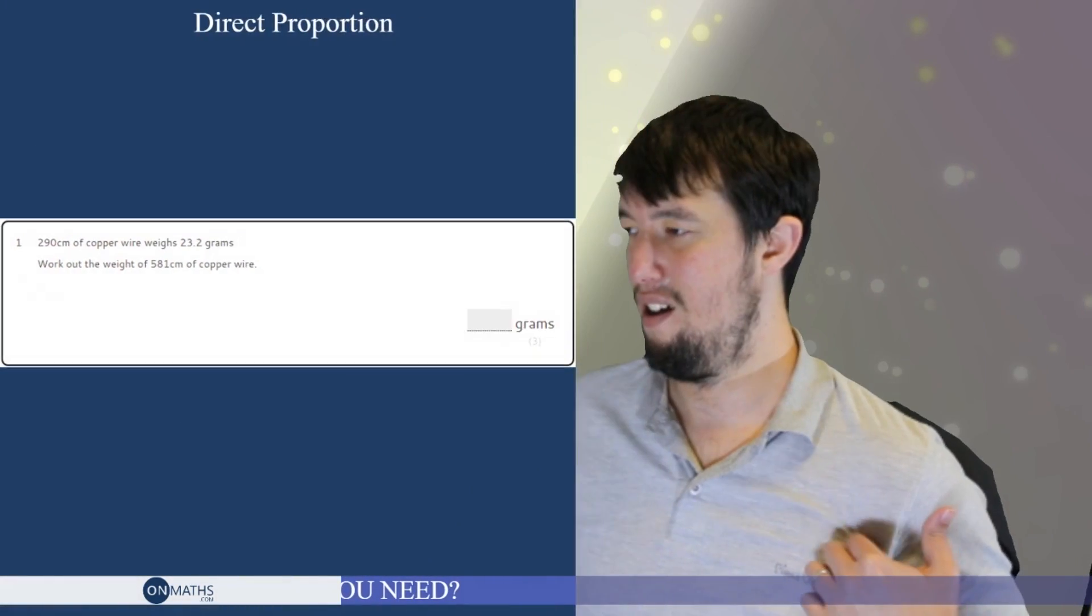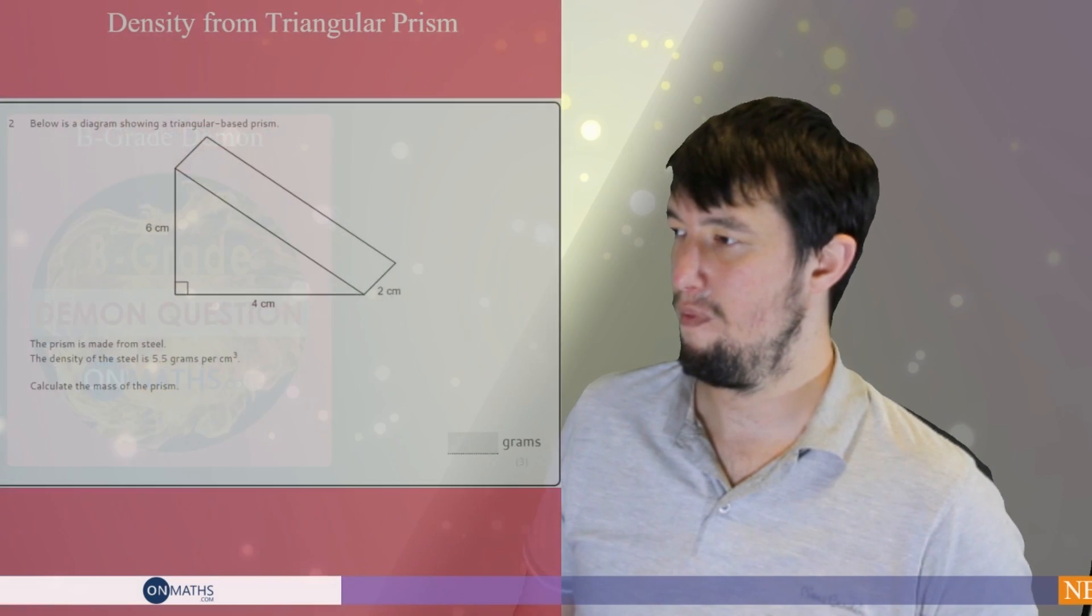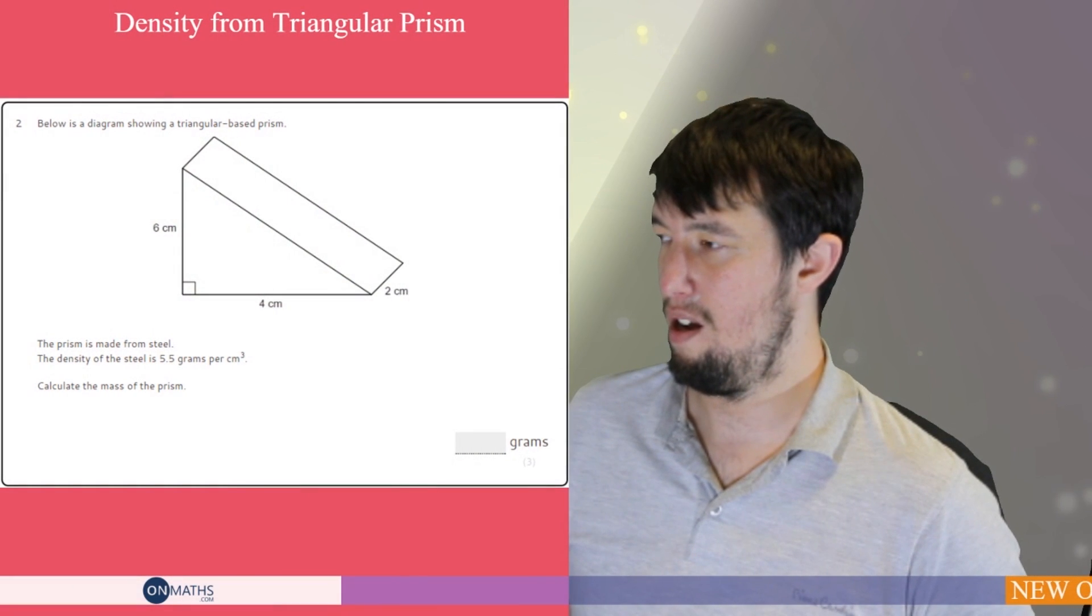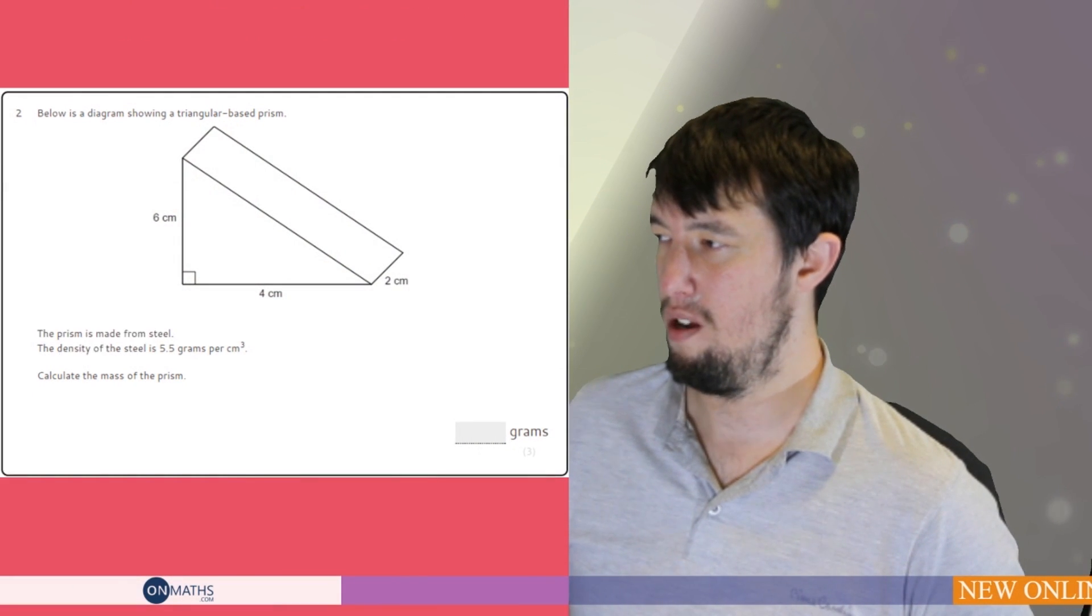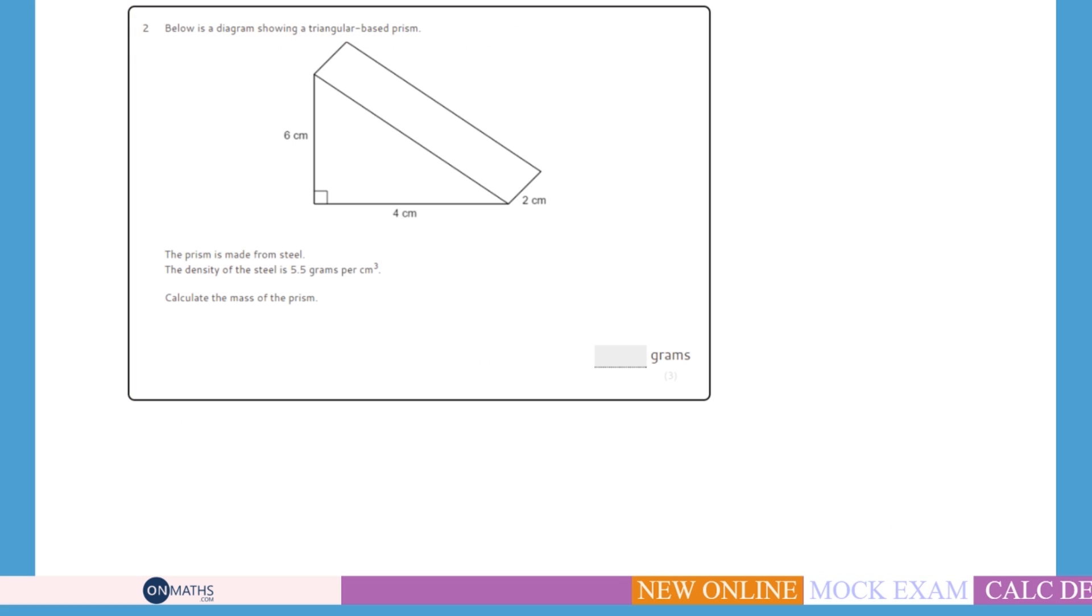Fantastic. Okay, let's move on to the B grade question. And this is quite an interesting one. If you'd like to pause the video now and have a go. Okay, let's give it a go. So we've got a triangular-based prism, and it's six by four by two, and we've got density involved.